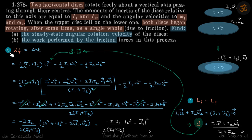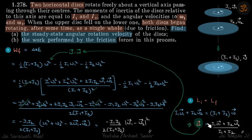Let's do part A first. Since the frictional force is internal to the system, we can conserve angular momentum about the axis. So I₁ω₁ vector plus I₂ω₂ vector equals (I₁ + I₂)ω vector, which gives us the expression for ω vector.